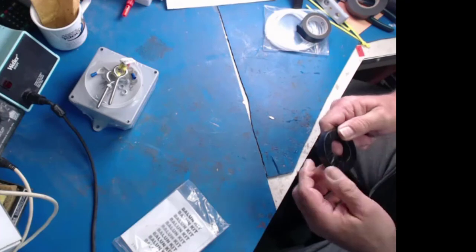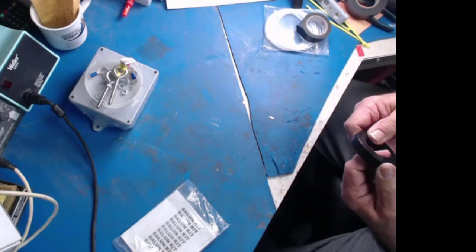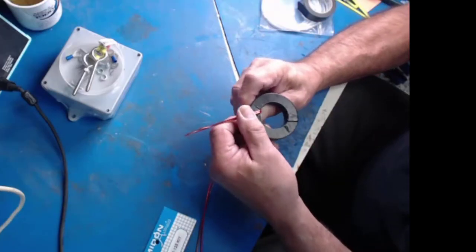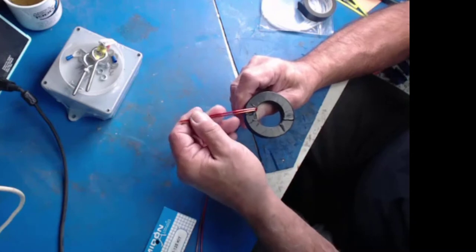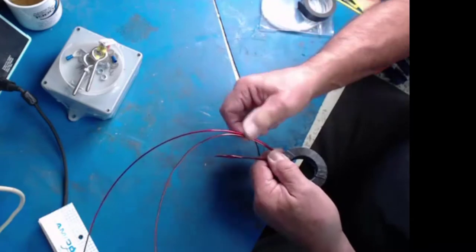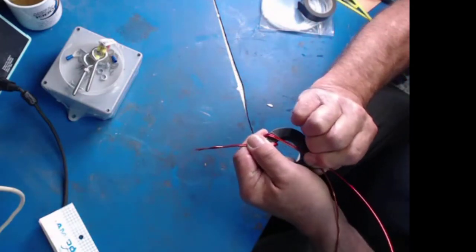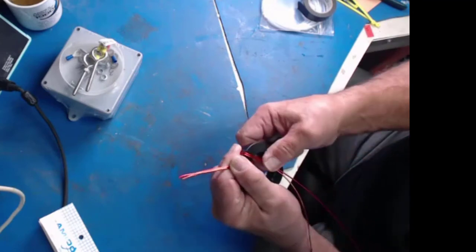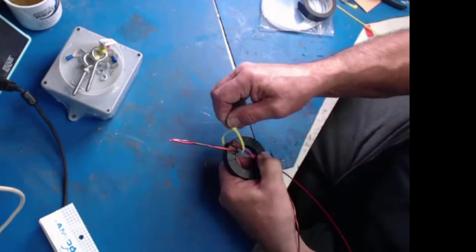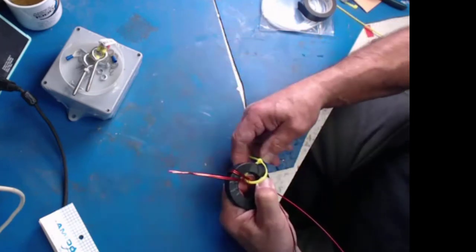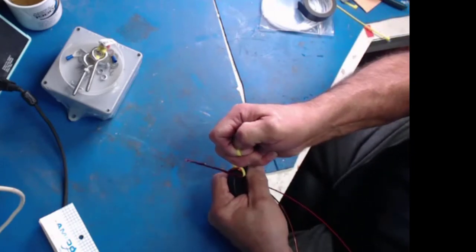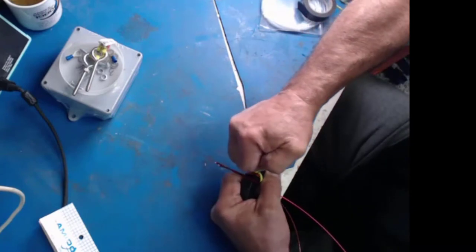This is where the fun begins. We take our two pieces of wire, we're going to wrap them through one time, bring them over the top again, and we're going to stop right here for a moment. In order to retain, we'll put a tie wrap in there and hold it, and then we'll continue with the other wraps.